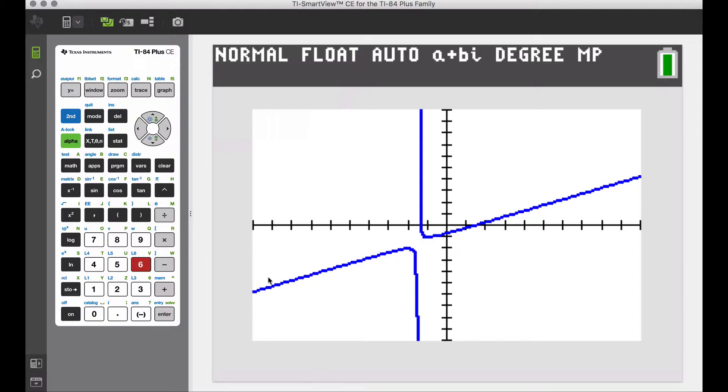Because on this interval here, we have a function that changes from increasing to decreasing. This is a relative maximum relative to this interval here. Now we also have a relative minimum right here when x is negative 1. Because from here, our function changes from decreasing to increasing. Which implies we have a minimum here relative to this interval here.